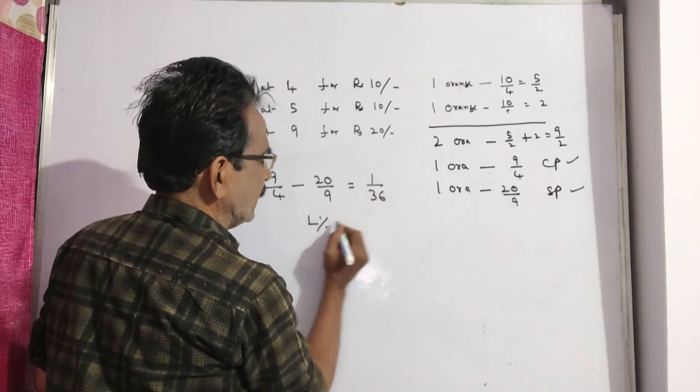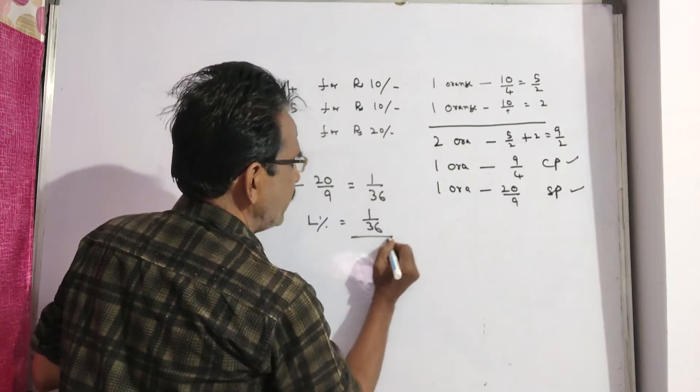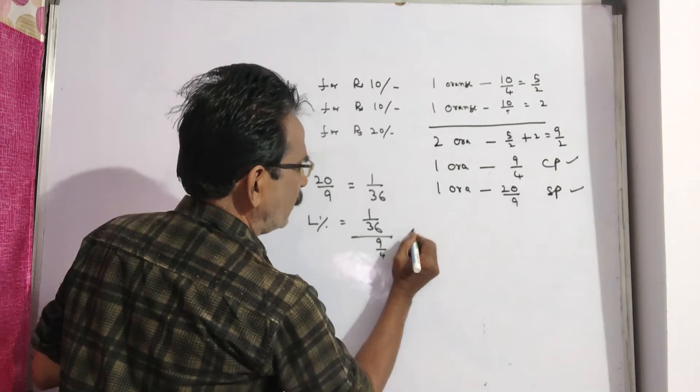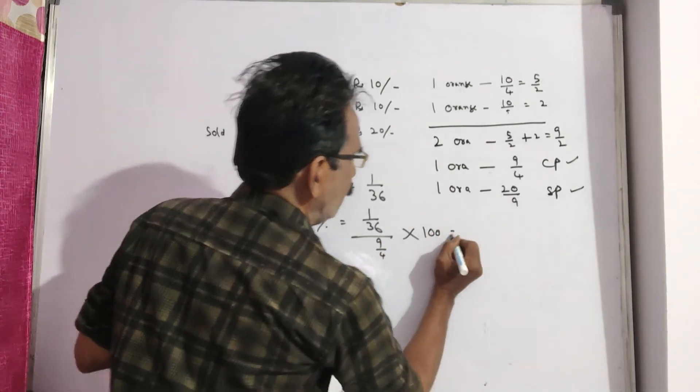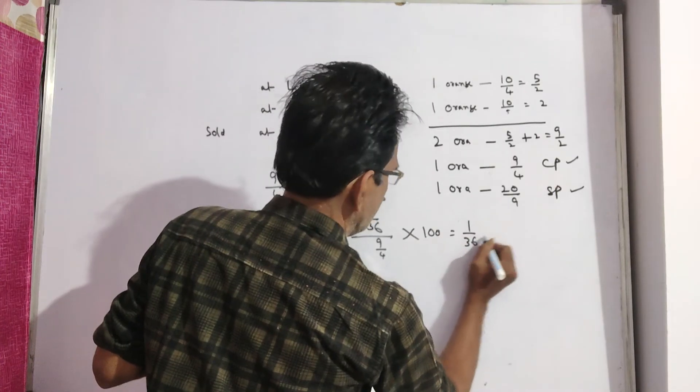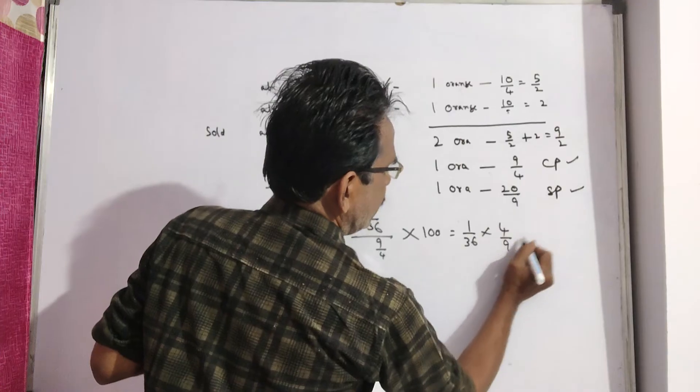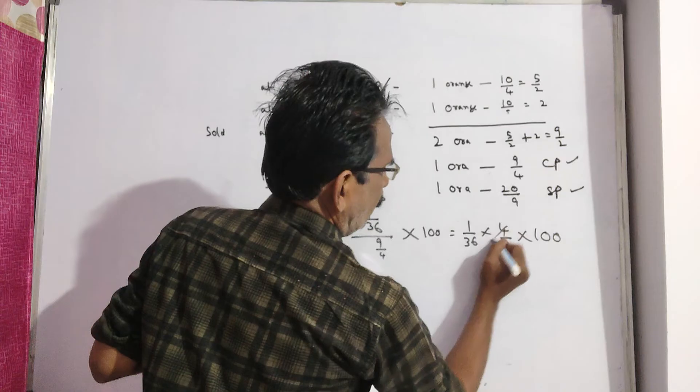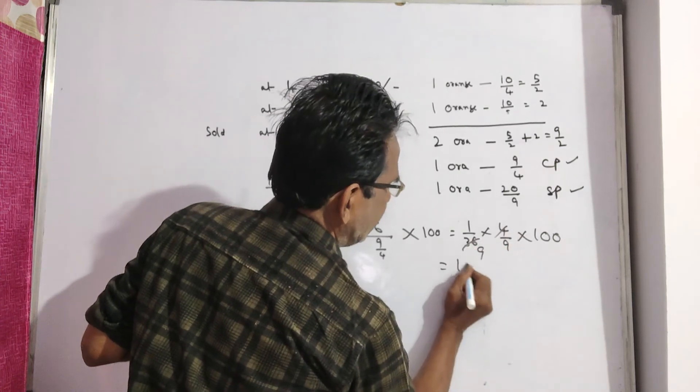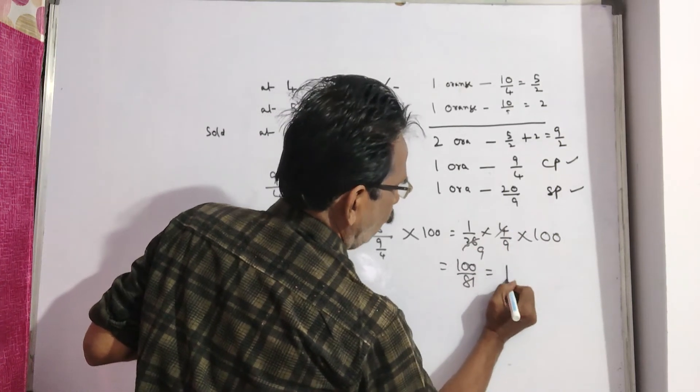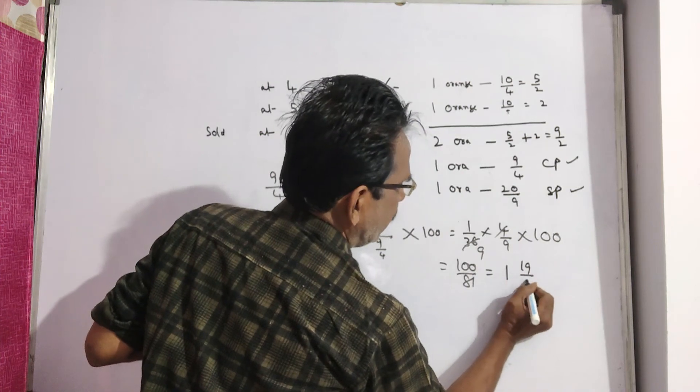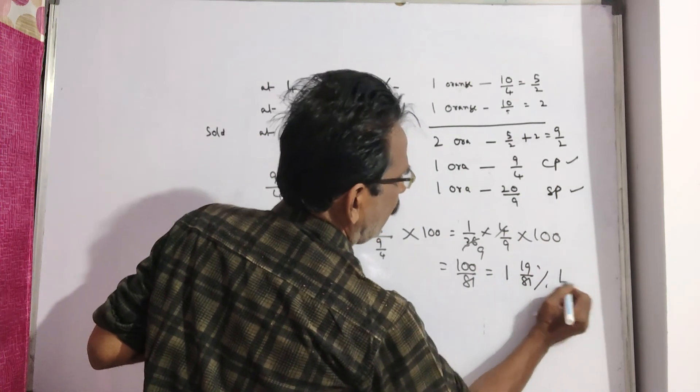Loss percent is equal to loss by cost price, 9 by 4, into 100. That is equal to 1 by 36 into 4 by 9 into 100. 4 cancels, 100 by 81. That is equal to 1, 19 by 81 percent loss, friends.